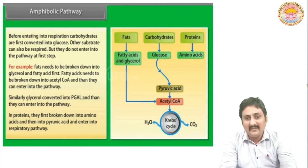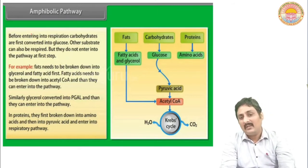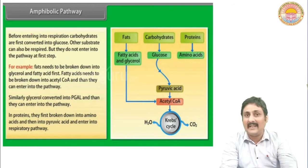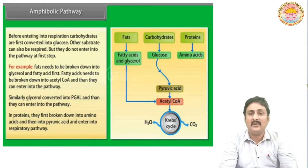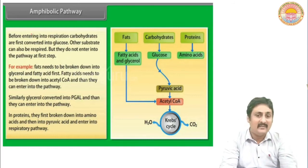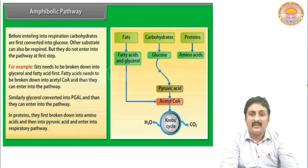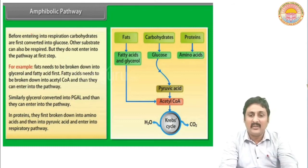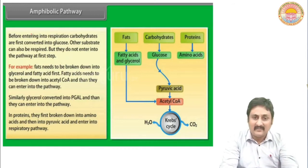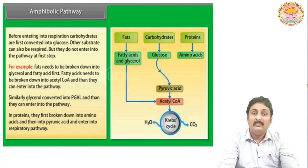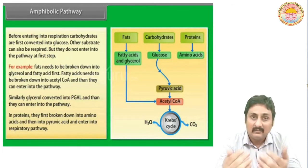Fatty acid and glycerol enter the chain and form acetyl coenzyme A, then enter the Krebs cycle. Carbohydrate glucose forms pyruvic acid, then acetyl coenzyme A, and enters the Krebs cycle. Protein forms amino acids, which either form pyruvic acid or acetyl coenzyme A in order to enter the Krebs cycle. This is catabolism — a complex substance is breaking down into simple substances.